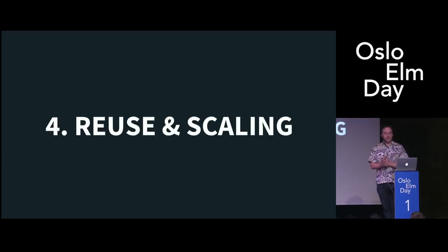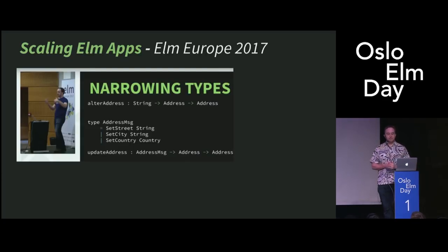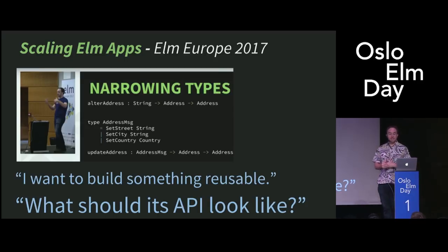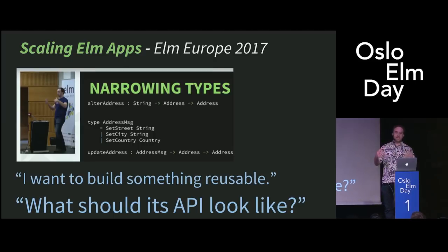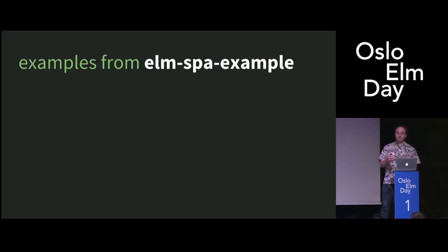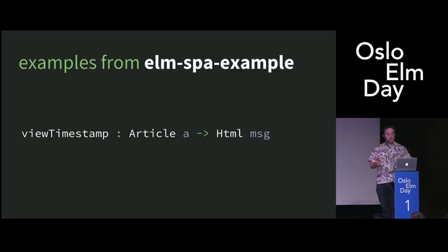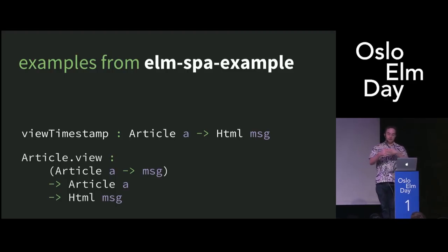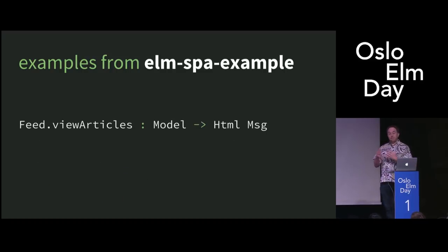And finally, we come to reuse and scaling. I gave a whole talk about scaling Elm apps in 2017, and one of the things I talked about was that any time I find myself saying I want to build something reusable, the first question I ask is: what should its API look like? Because in Elm you have a different answer depending on the situation. This is a really key part of scaling Elm apps and of reuse. So I gave some examples from the original Elm SPA example: view_timestamp, which took an article and returned some HTML; article.view, which took a function that took an article and returned a message — I called this the 'teach me how to message' technique — and then took an article and returned HTML. I also had a feed, which was an entire nested thing with its own model, view, and update — the most complex API of the examples.